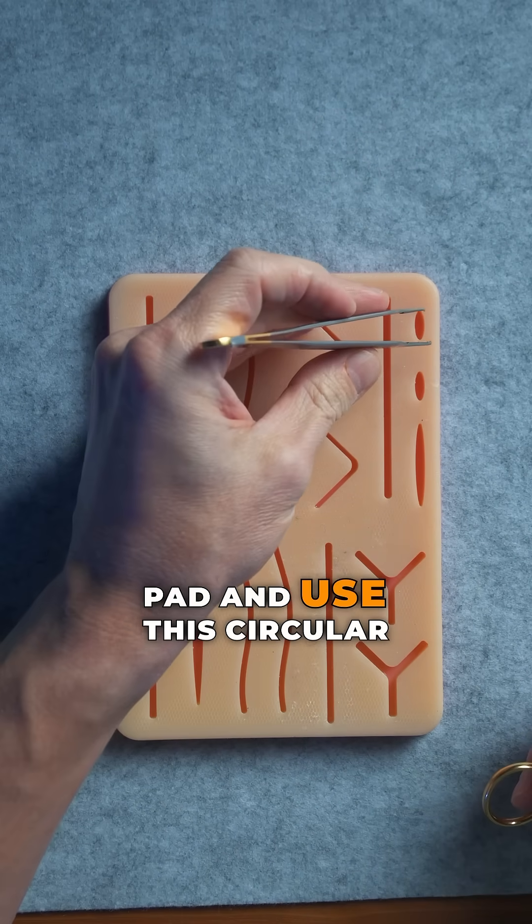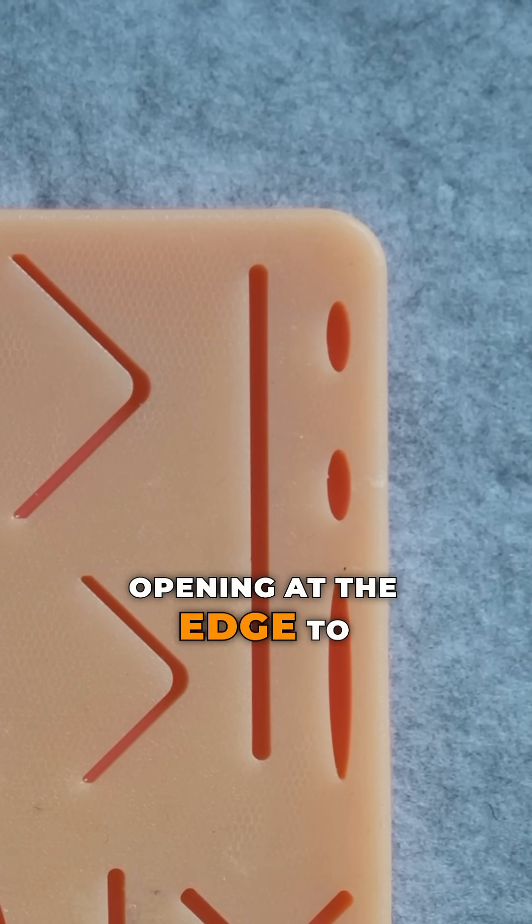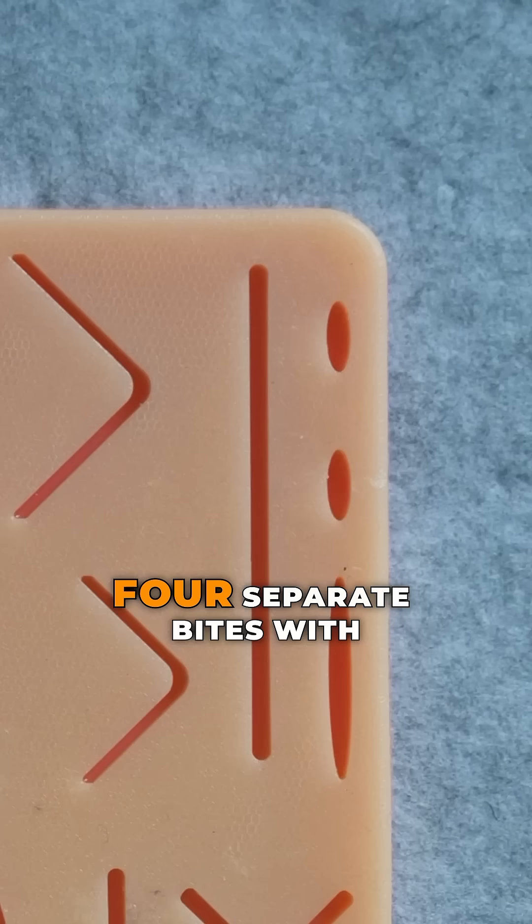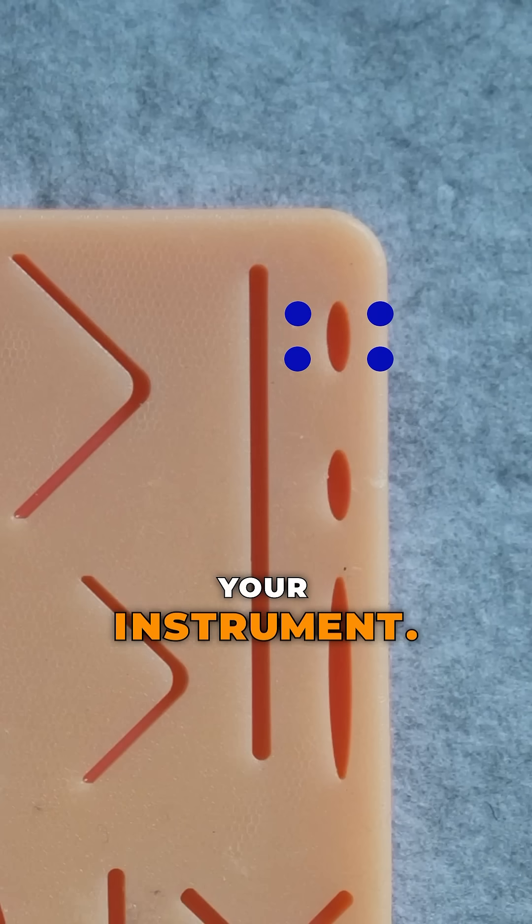To demonstrate, we're going to go to a suture pad and use this circular opening at the edge to represent the stump of the appendix. The Z-stitch requires four separate bites with your instrument.